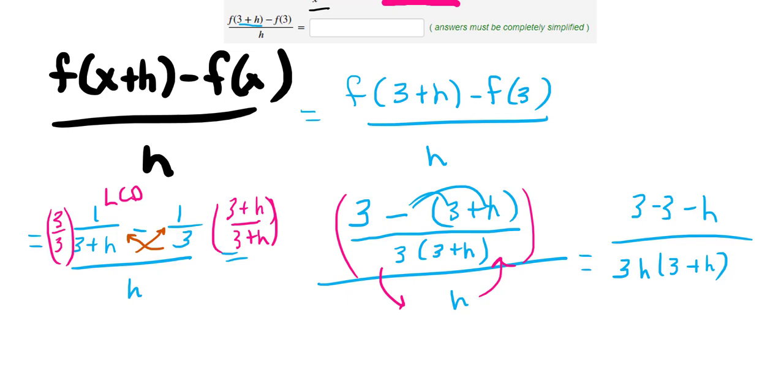So from here we can see that those cancel. I could cancel an h here, and now I can finally distribute this out.